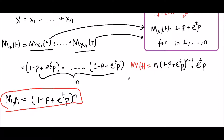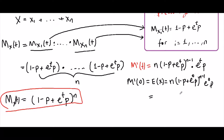So this is the first derivative. If we plug in t = 0, that gives us the expectation. That's going to be n times (1 minus p plus e^0 · p)^(n−1) times e^0 · p. Since e^0 = 1, we get 1 minus p plus p, and the p terms cancel, leaving n times 1^(n−1) times p, which gives us np as the expectation.